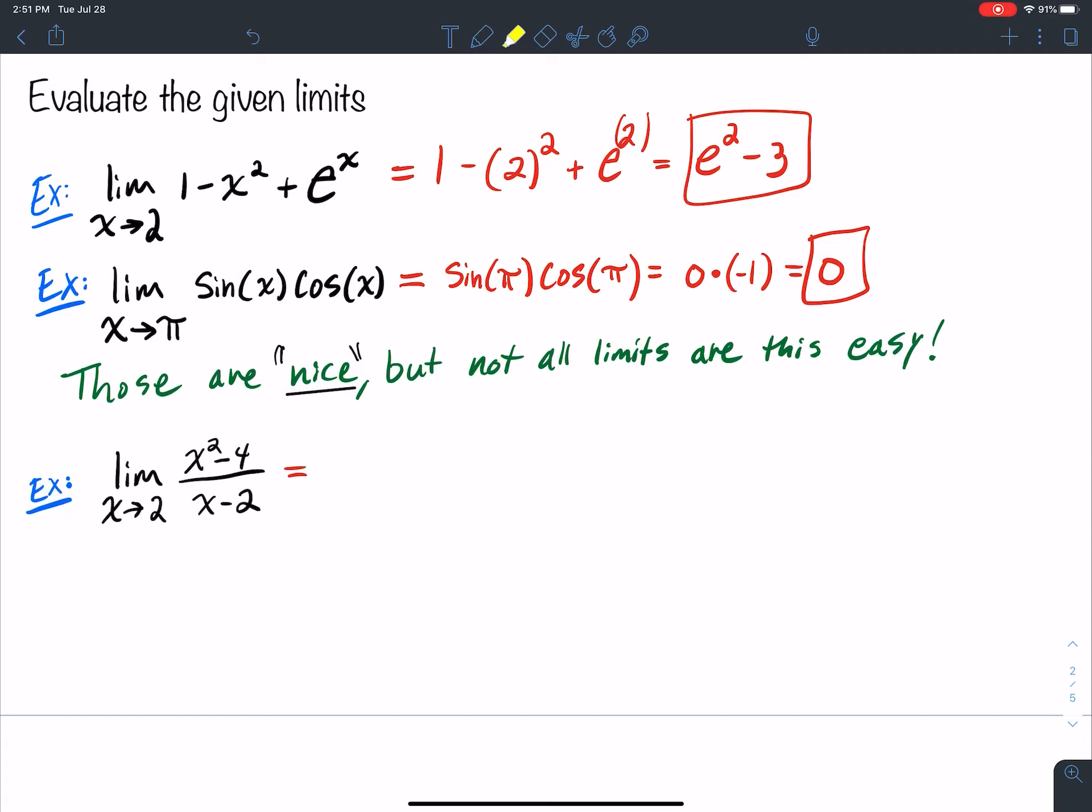But what about a scenario like this? Let's try plugging in 2 for x. What happens? Well, I get 2 squared minus 4, so that's 4 minus 4 is 0, and then 2 minus 2, that's 0. So I have 0 over 0.